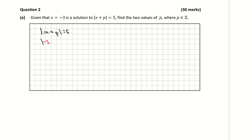So minus 3 plus p is equal to 5. Now, like I said, that could have been a negative 5, so we also have minus 3 plus p is equal to negative 5. All we have to do is solve both of those equations. Moving over the negative 3, or adding 3 to both sides, I get 5 plus 3, so p is equal to positive 8.